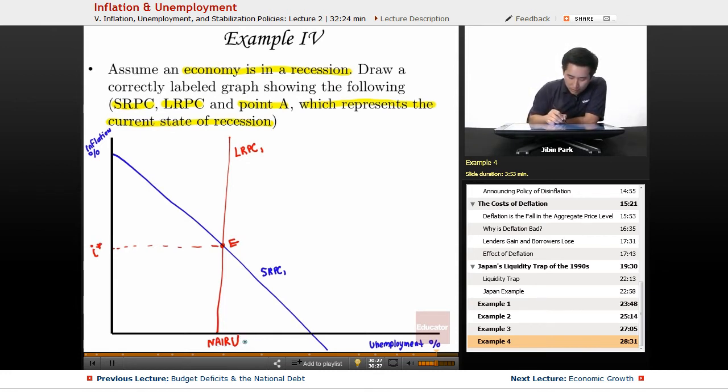And NIRU, let's label as U1. Okay, so what is the point of recession? So here's the million dollar question: is it going to be to the right or is it going to be to the left of the LRPC?